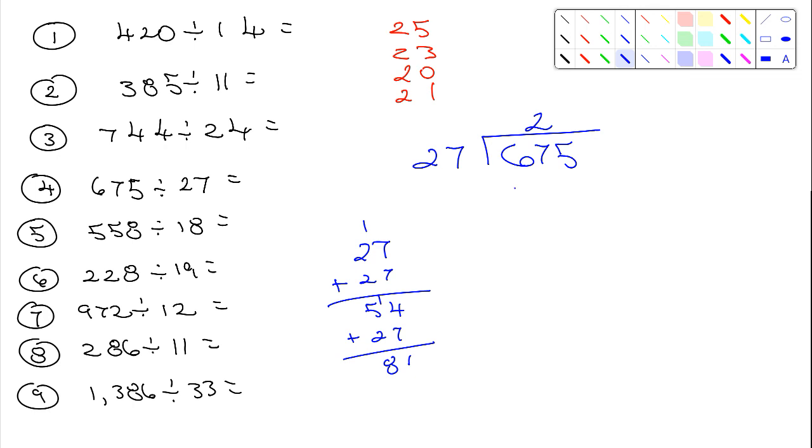And so what is that? It's going to be 54, and I'm going to subtract. 4 from 7 is 3, 5 from 6 is 1. Okay, so now I need to pull down the 5. Oh man, now I got to figure out how many times 27 goes into 135.